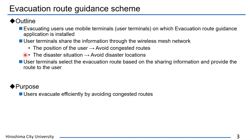The position of the user is used to avoid congested routes. The disaster situation is used to avoid disaster locations. User terminals can grasp the disaster situation and the congested route by sharing the disaster information among users, and provide the evacuation routes suitable for each user. Therefore, users can evacuate efficiently by avoiding congested routes.